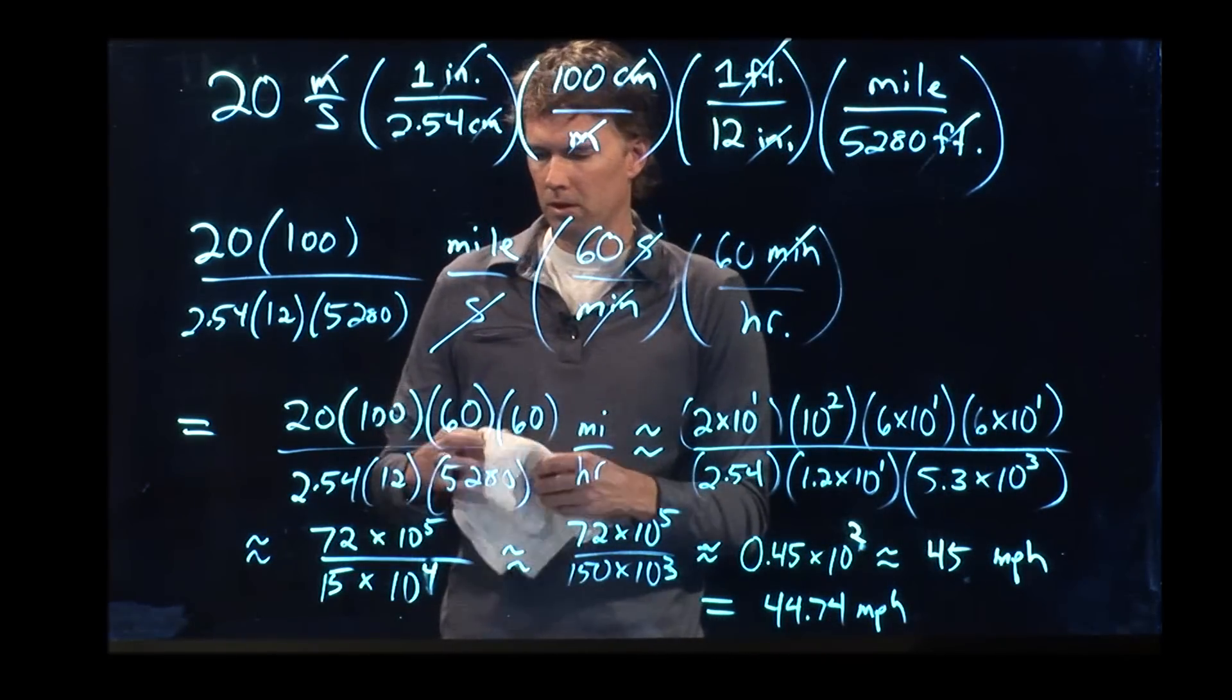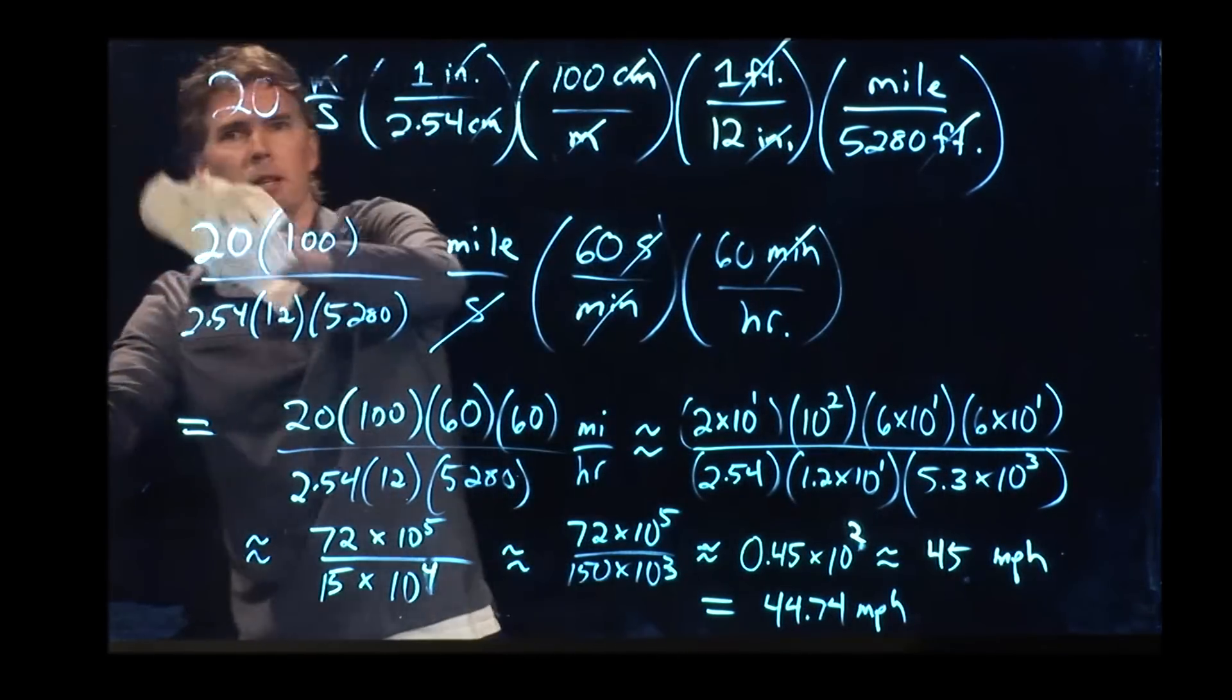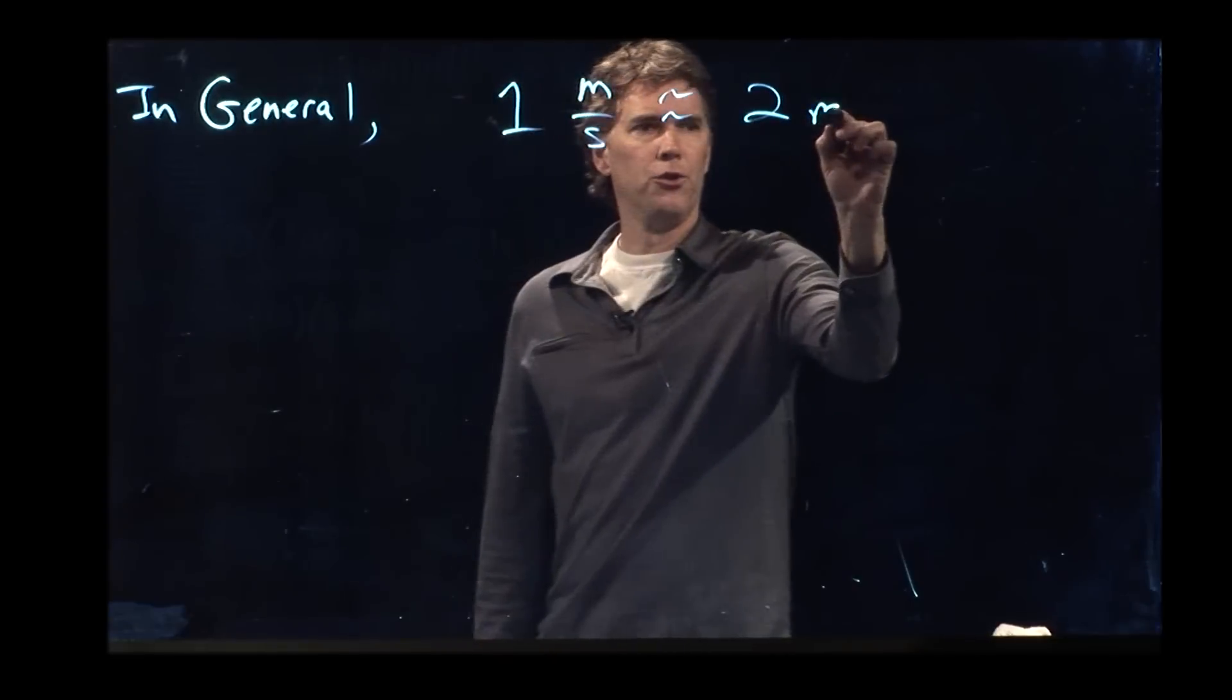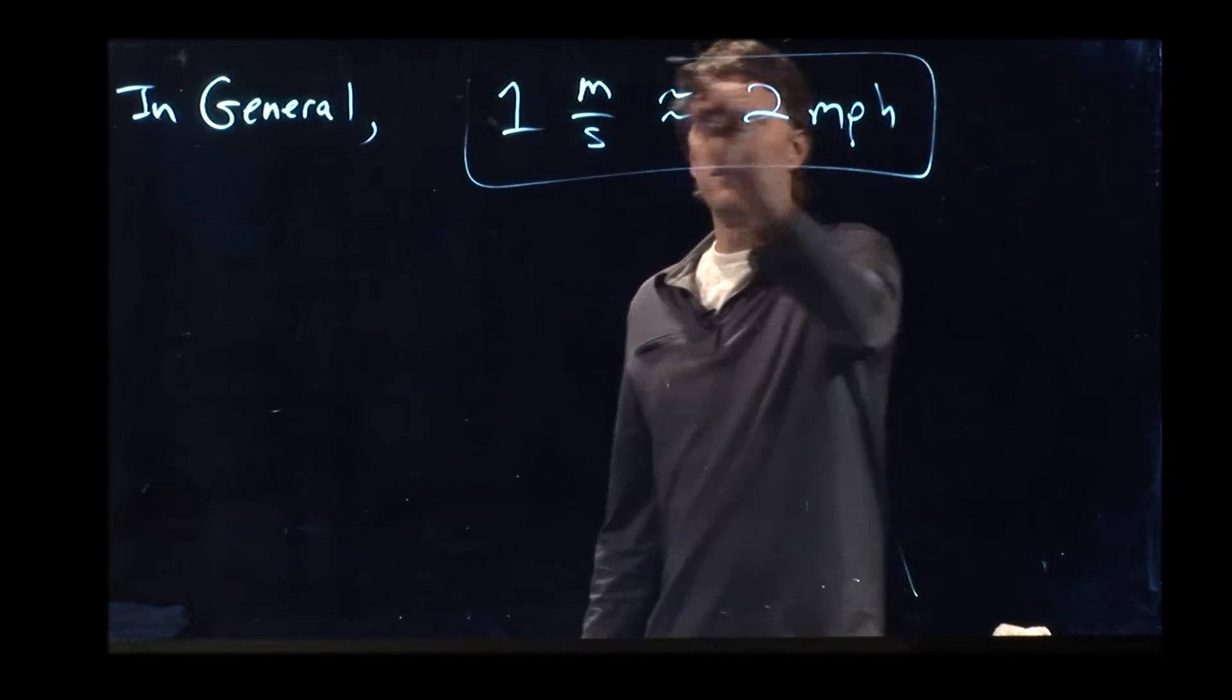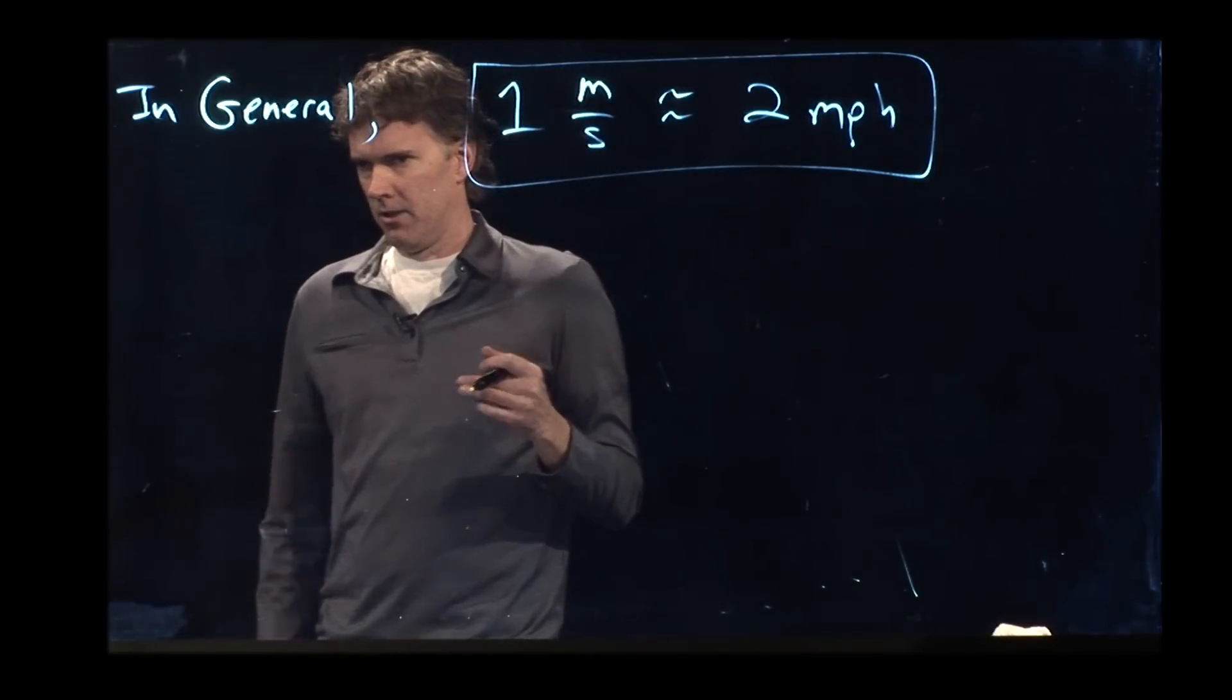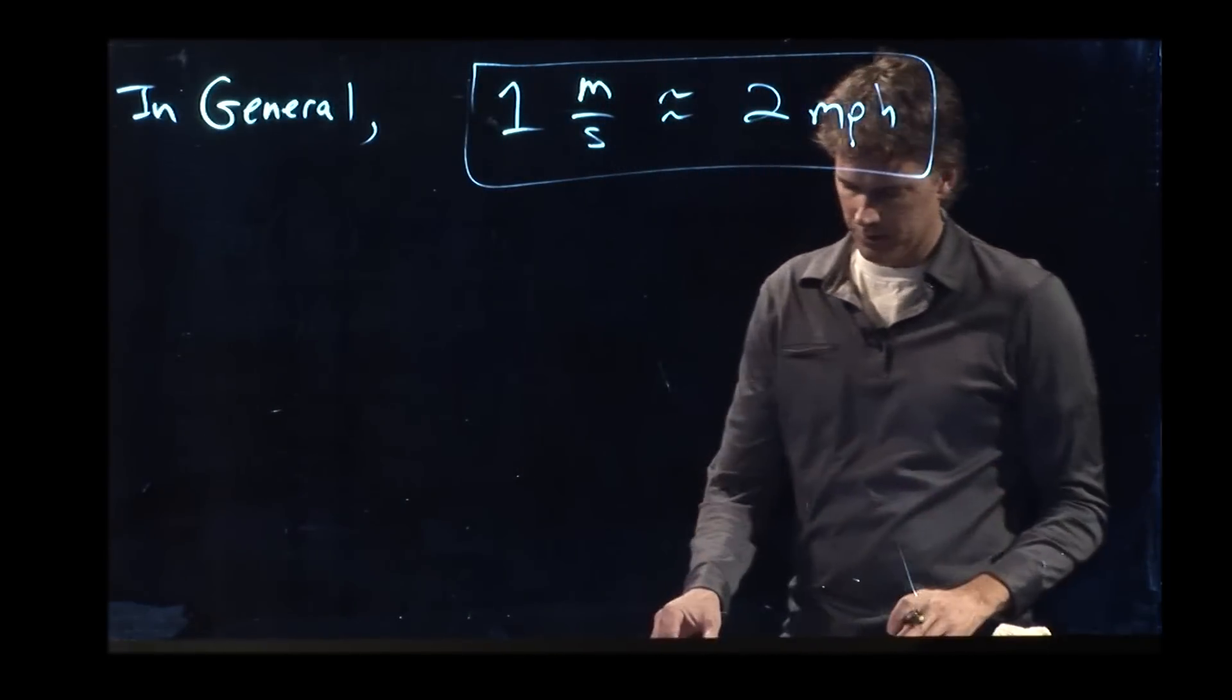And let's come up with a way to remember this. 20 went to about 44. So let's approximate this. 1 meter per second is approximately 2 miles per hour. Okay. So if you are running at 20 meters per second, it's approximately 40 miles per hour. Just double it. And this will help you make sense of the answers that you get on your homework problems.